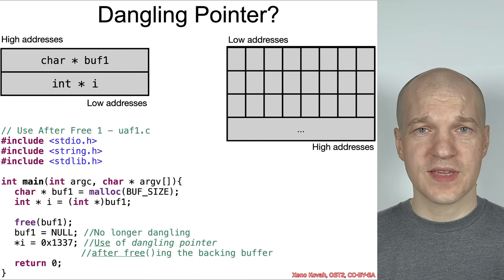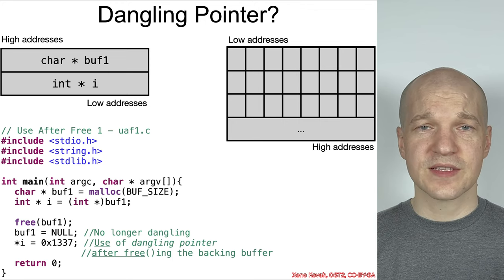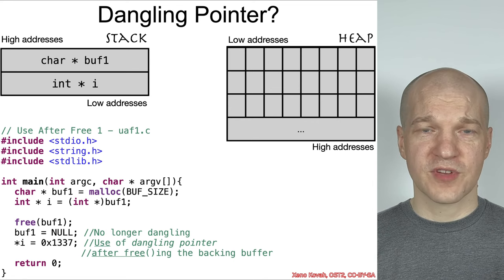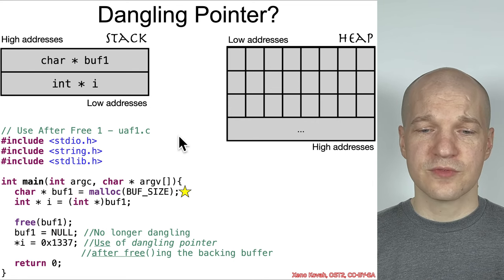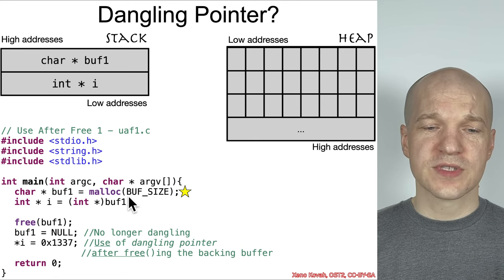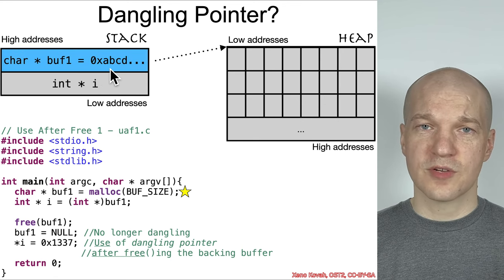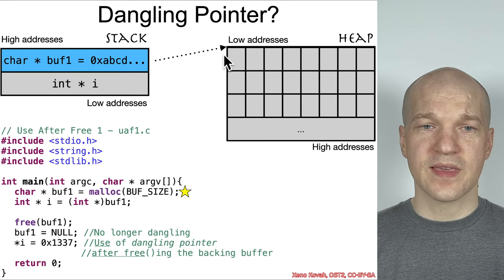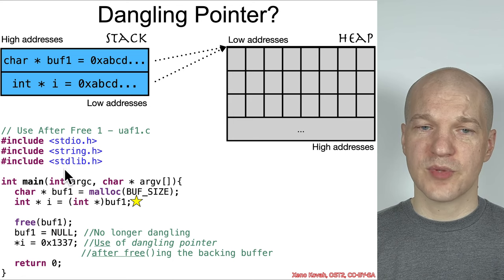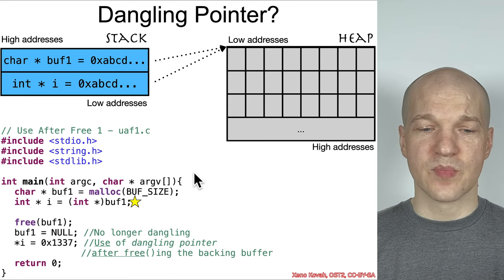I want to show you a simple example, sort of akin to the uninitialized data access from earlier in the class. We've got our stack over here and our heap over here, and I want you to follow the bouncing star. First thing: malloc buff1. That fills in the local variable buff1 with a pointer somewhere in the heap. Then buff1's address is assigned to local variable i, so i points at the same location somewhere on the heap.